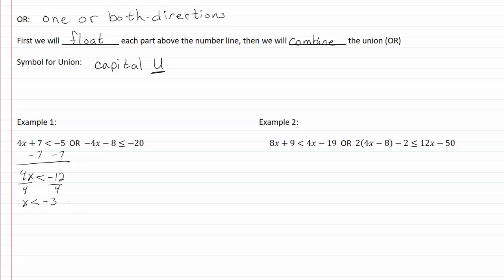Now let's do our other part. I want to make sure I bring down my 'or' so that I don't forget it at the end. Again, add the opposite to our number. We have negative four x is less than or equal to negative twelve. Divide by negative four, and remember to flip our sign because we divided by a negative. We get x is greater than or equal to three.